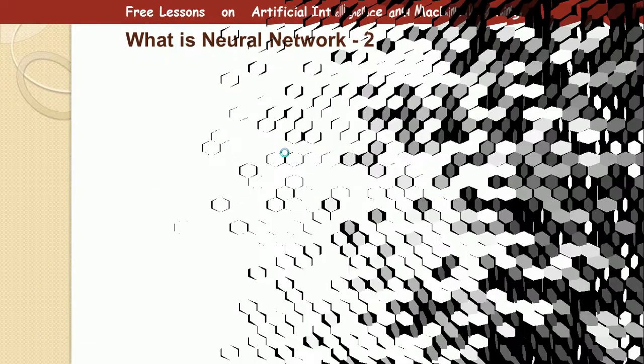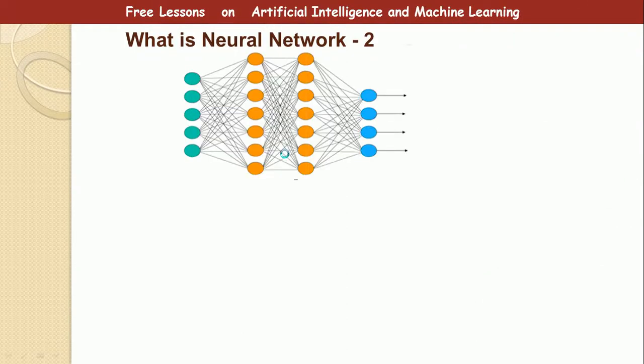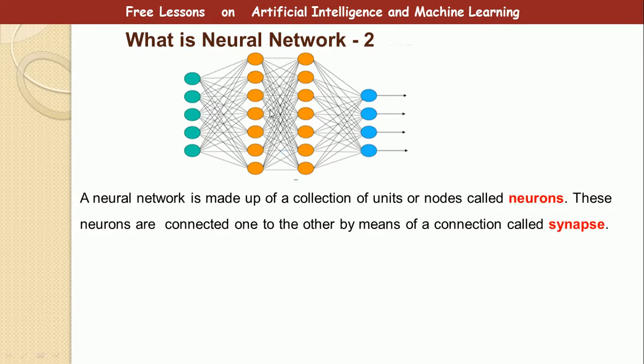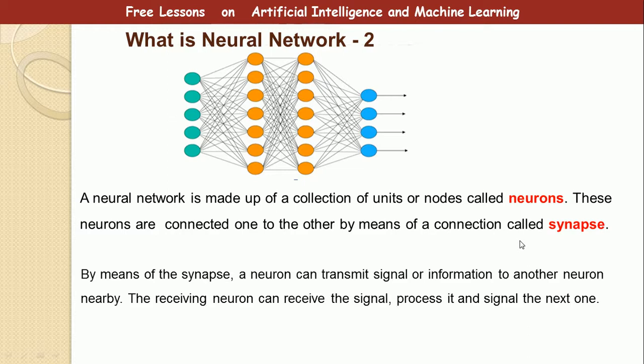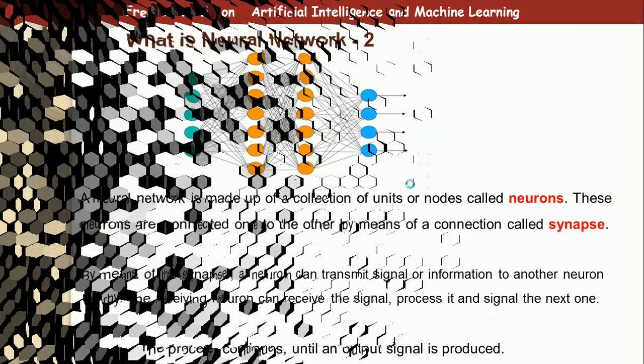Alright, so what is neural network? Let's give more explanation. So what you see here is a neural network made up of several connections called neurons. So the nodes, the round nodes, they are called neurons. And the connection between them, the edges between them, is called a synapse. In real biological terms, that is how the brain works. The brain is made up of neurons and synapse. So, by means of a synapse, a neuron can transmit signal or information to another neuron. And the receiving neuron can transmit signal to the next one. So this process continues until an output signal is produced.